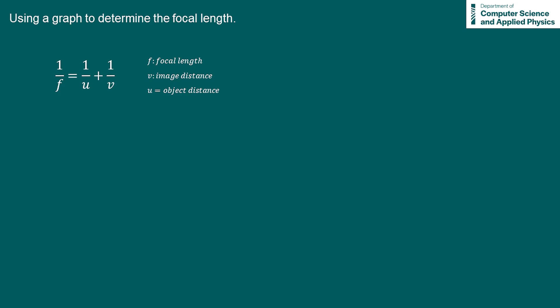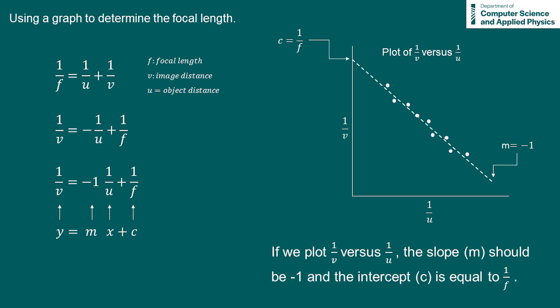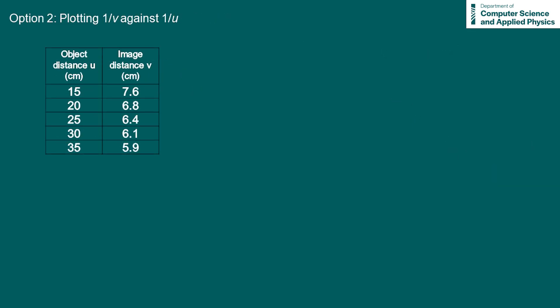So how can we use a graph to determine the focal length? We start with the lens formula and rearrange it in terms of one over v. We get: one over v equals minus one over u plus one over f. That's the same as one over v equals minus one times one over u plus one over f. We have an equation of a straight line. If we plot our data for one over v against one over u and apply a line of best fit, the slope of the line should be minus one and the intercept is equal to one over f.